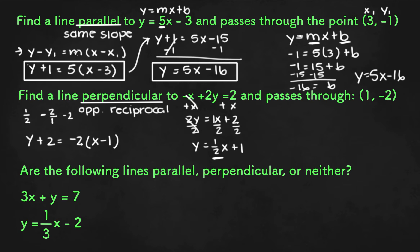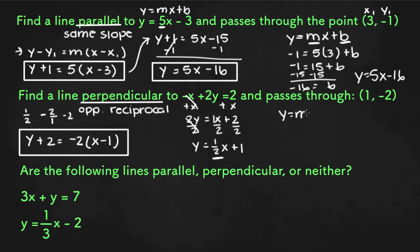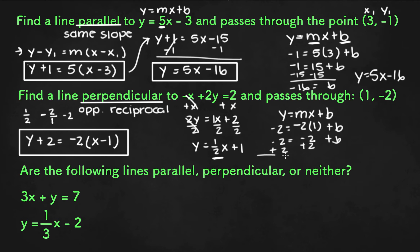If we need slope-intercept form, we can either convert the point-slope form or start with y equals mx plus b and plug in what we know: slope is negative 2, x is 1, and y is negative 2. So we get negative 2 times 1 equals negative 2, plus b equals negative 2. Adding 2 to both sides gives b equals 0. So the final equation is y equals negative 2x plus 0, or simply y equals negative 2x.